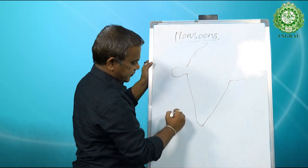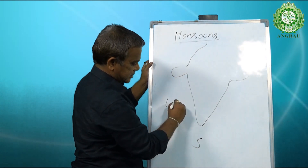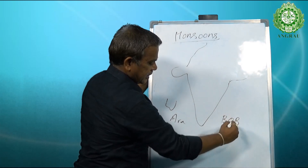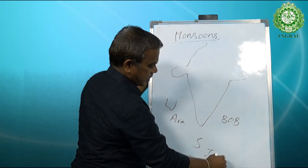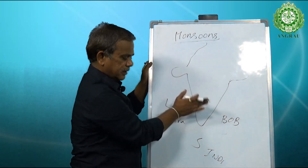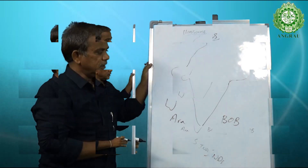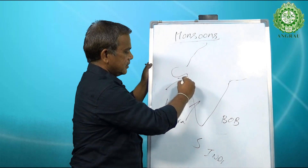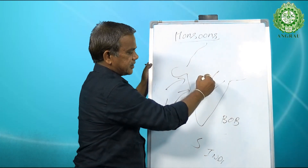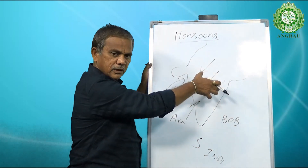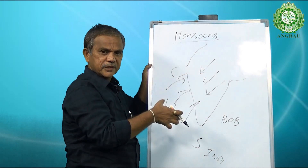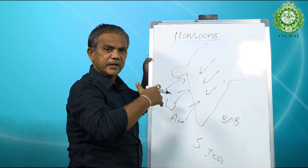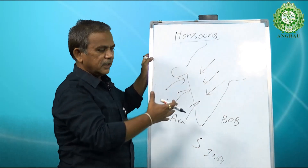We get winds from both south and west. We have the Arabian Sea, the Bay of Bengal, and the Indian Ocean, with our landmass entirely in the northern part of the equator. The trade winds — tropical easterlies — come in the opposite direction, but a reversal of the winds occurs due to differential heating of the earth.